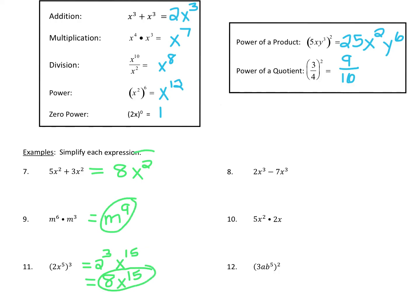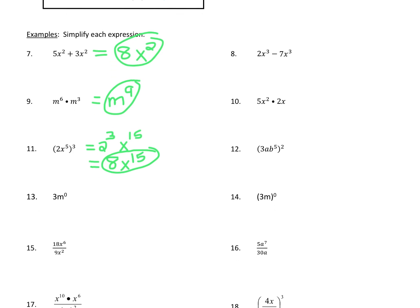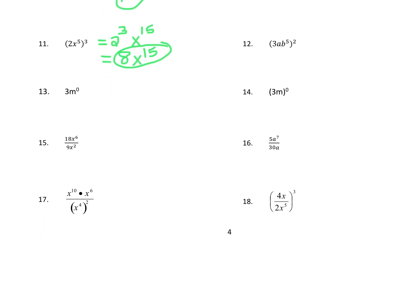Number 13 — anything raised to the zero power is equal to 1, but it's not the whole thing being raised to the zero power, just the m is. This 3 actually has a little exponent of 1. So this is really 3 to the 1st times m to the 0, which equals 3 times 1, so the answer is 3. Compare this to if 3m were in parentheses being raised to the zero power — then the whole thing is raised to the zero power and would equal 1.